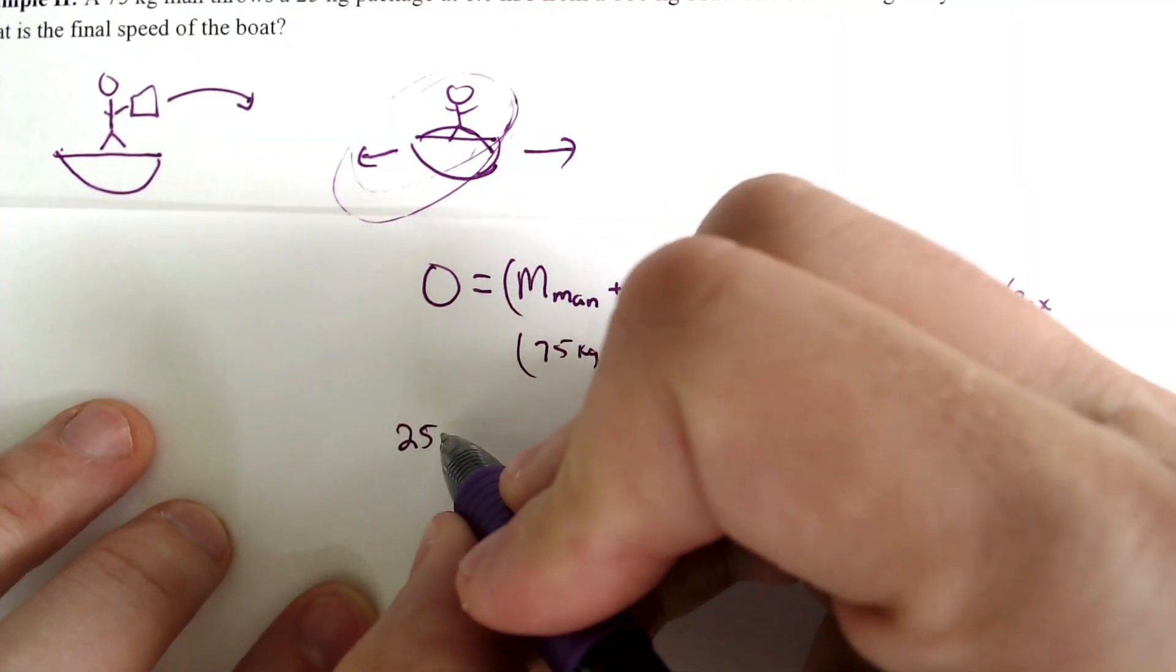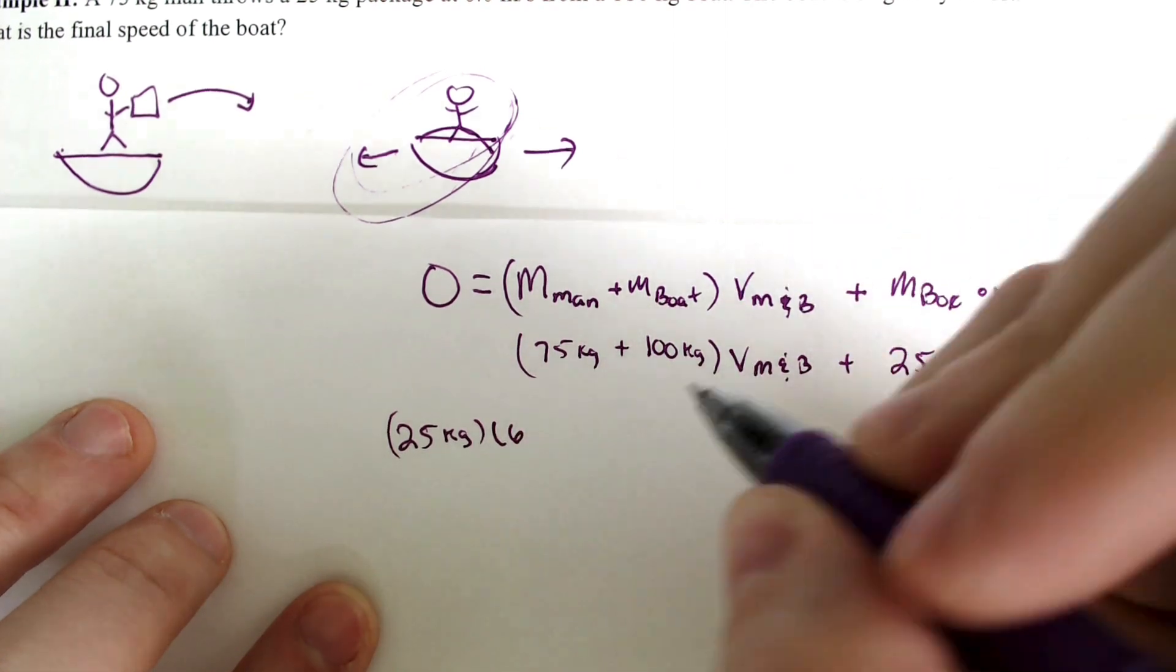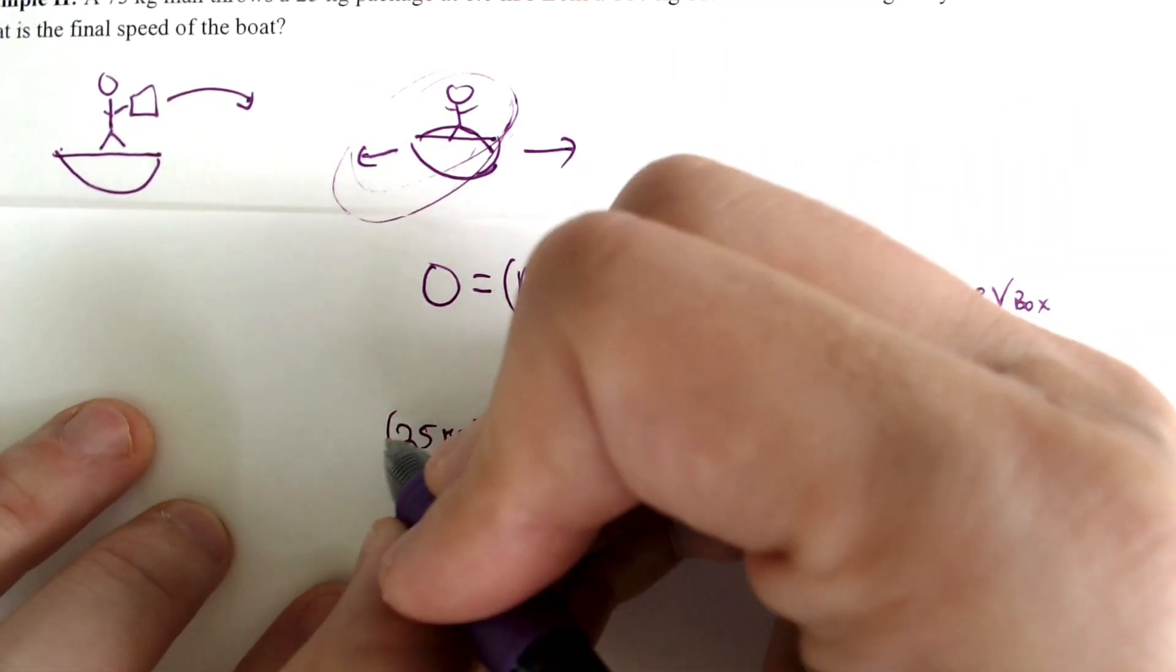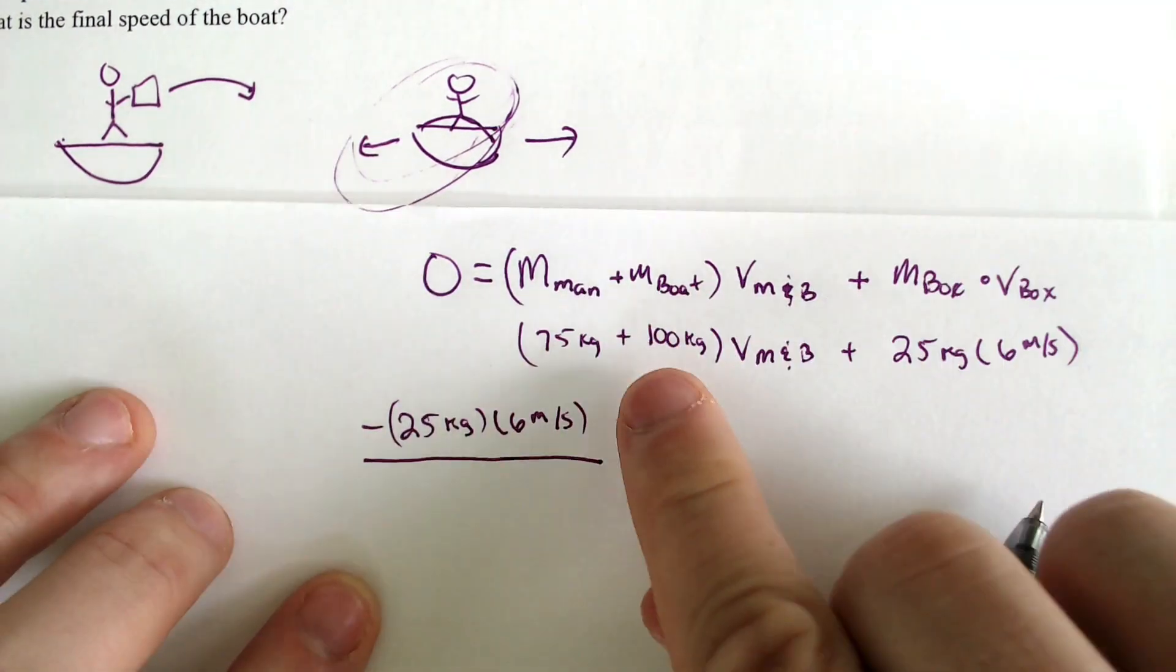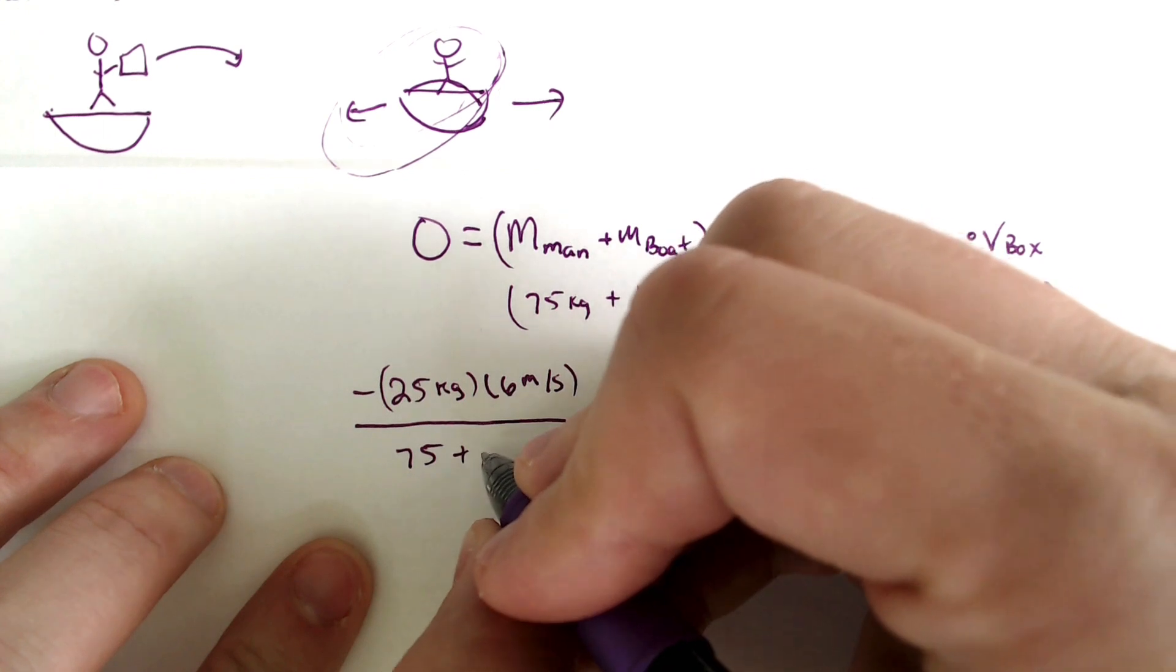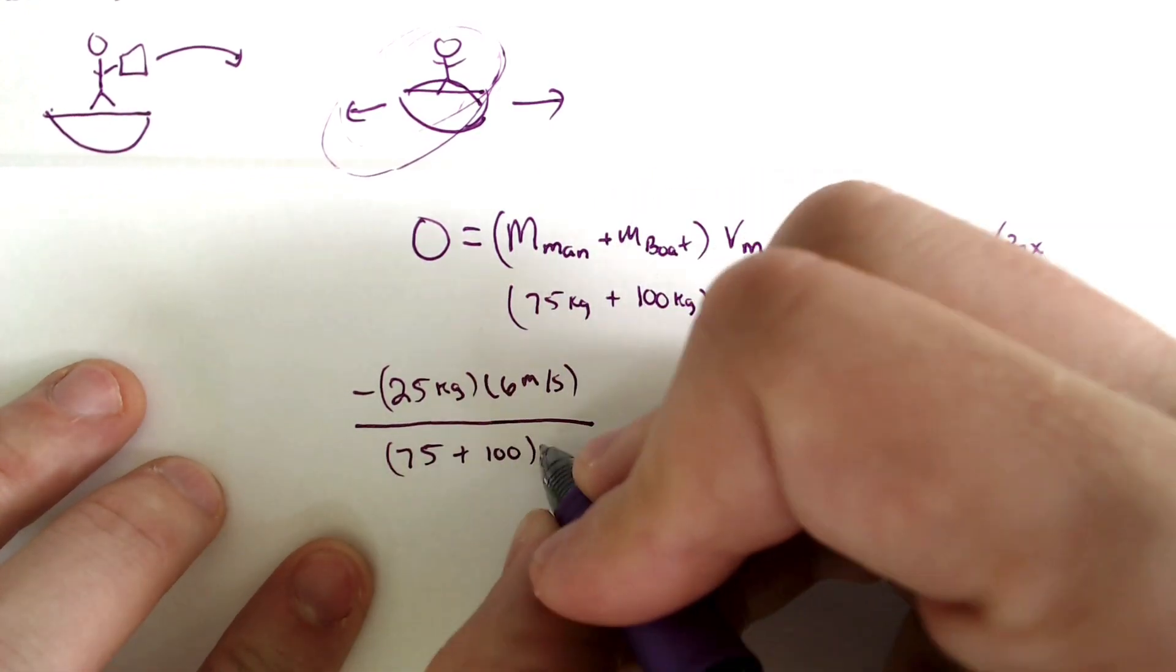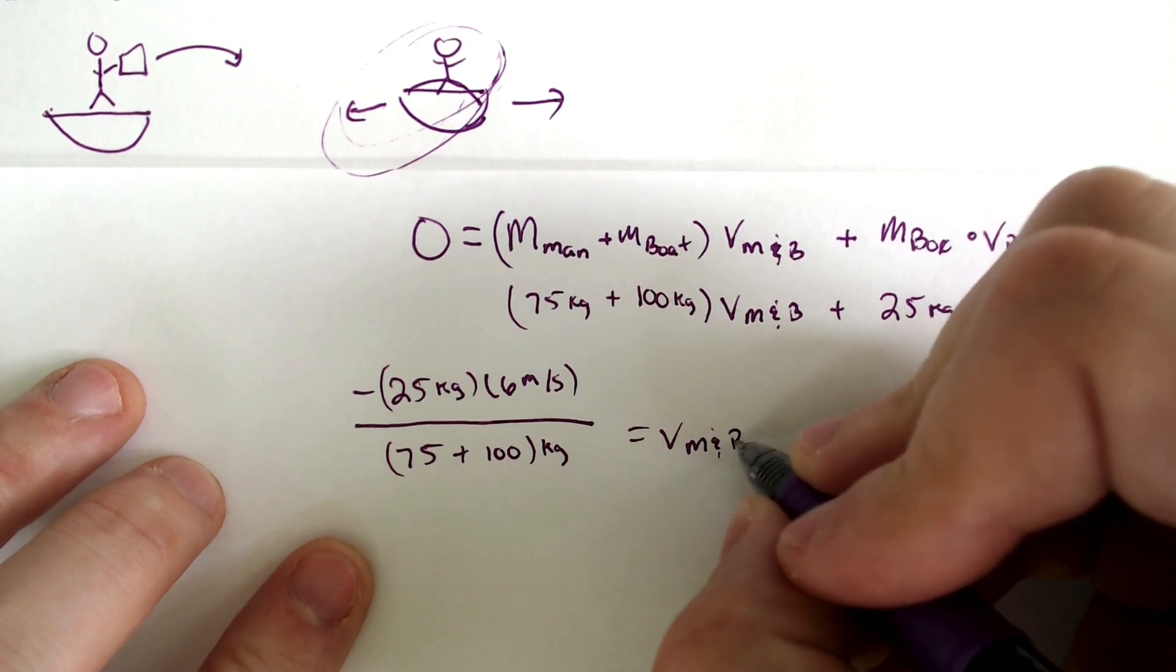We got 25 kilograms times 6 meters per second. That would be negative when we subtract it over. And then we would have to divide that by the 75 and the 100 kilograms. And that would give us the velocity of the man and the boat.